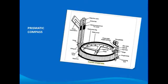A metal cover fits over the glass covers as well as the object vane when the compass is not in use.